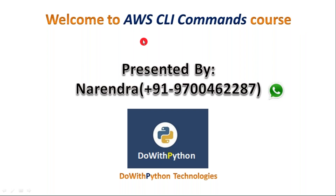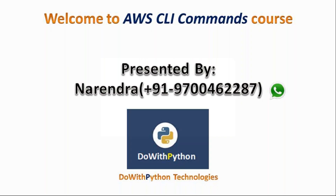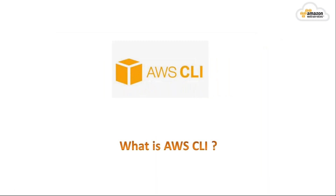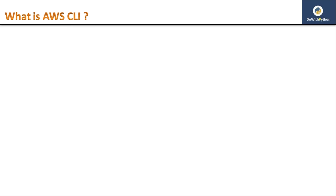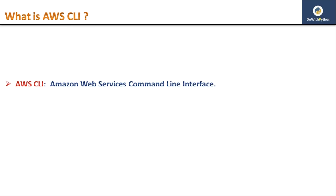This is a course video series presented by Narendra from Dual Python Technologies. In this video we are going to see what is AWS CLI and how to install AWS CLI. AWS CLI basically means Amazon Web Services Command Line Interface - it is an interface between your Amazon Web Services and the command line of your local host.